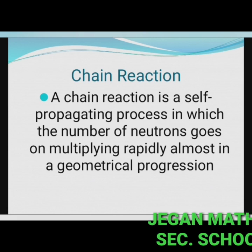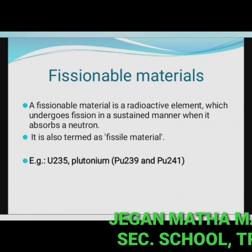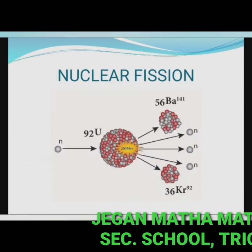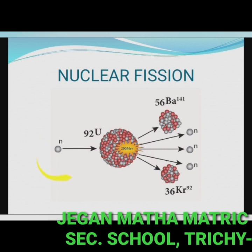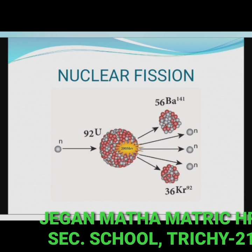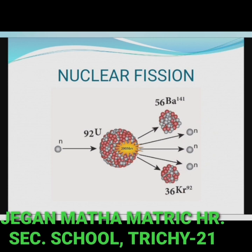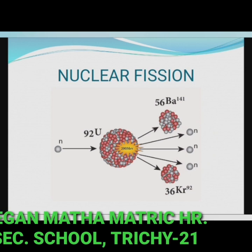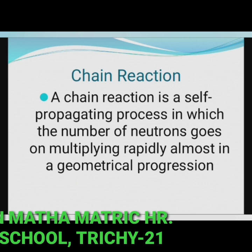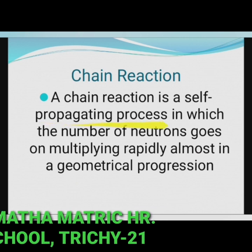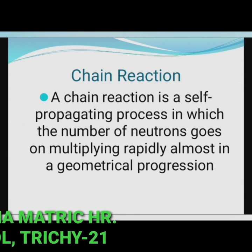Chain reaction: when a uranium nucleus is bombarded with a neutron, it undergoes fission producing three neutrons. These three neutrons in turn can cause fission in three other uranium nuclei present in the sample, producing nine neutrons. These nine neutrons in turn may produce 27 neutrons, and so on. This is known as a chain reaction — a self-propagating process in which the number of neutrons goes on multiplying rapidly, almost in a geometrical progression.